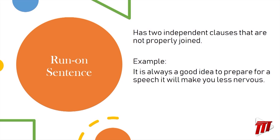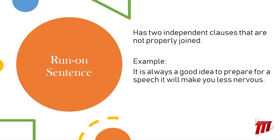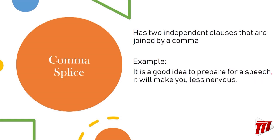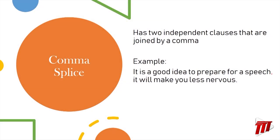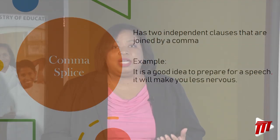Here's an example of a run-on sentence: "It is always a good idea to prepare for a speech it will make you less nervous." I pause naturally there, but notice there is no pause — that is a classic run-on sentence with two independent clauses. You also learned about comma splices: a comma splice has two independent clauses joined by a comma, such as "It is a good idea to prepare for a speech, it will make you less nervous." That is still not correct — a comma is not strong enough to separate two independent clauses.